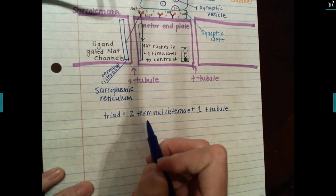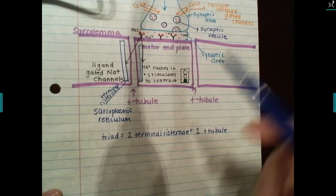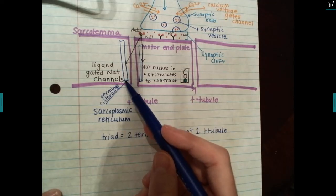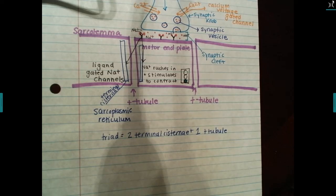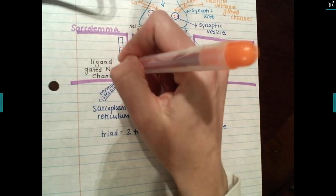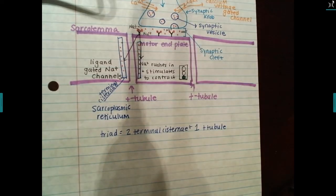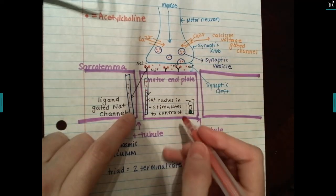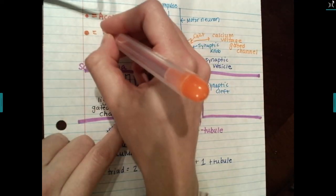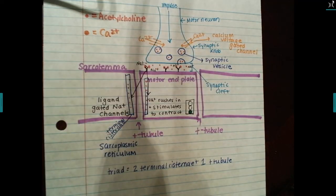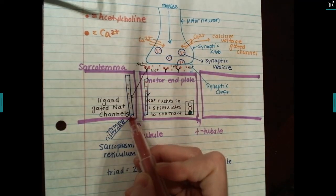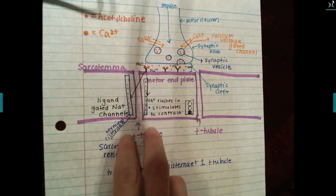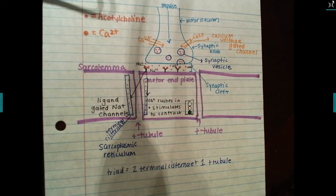The terminal cisternae store calcium — so not only do you have calcium up in the synaptic knob, you've also got calcium down in the terminal cisternae waiting to be used. In the muscle contraction notes today, you'll see why this calcium is just as important here. Anything orange on the paper refers to calcium.